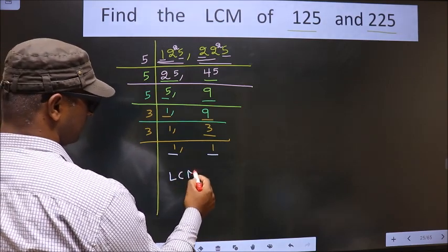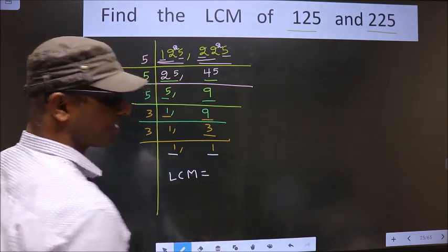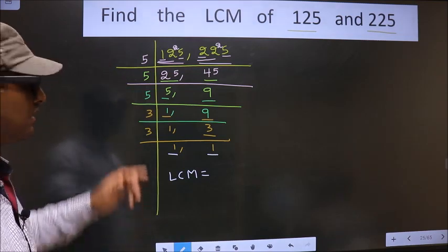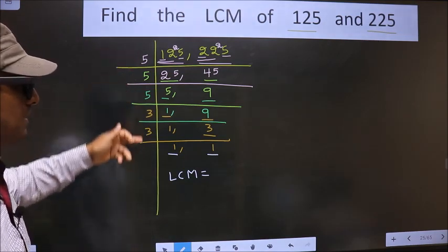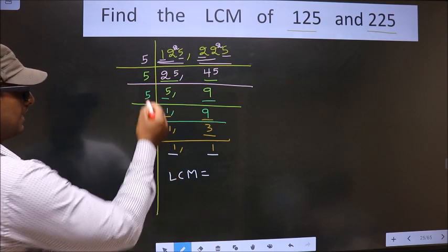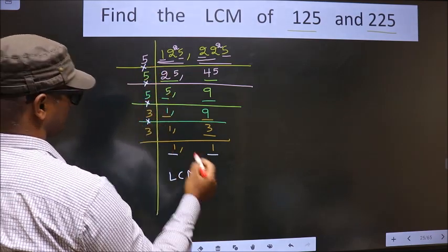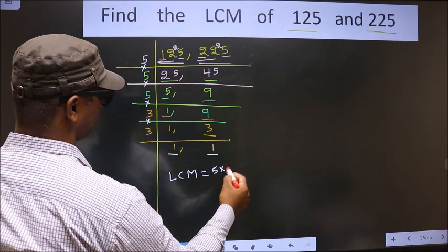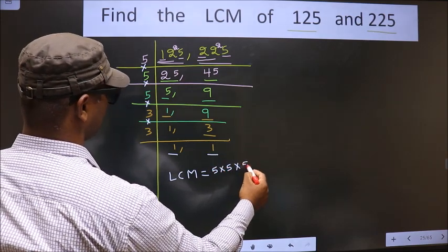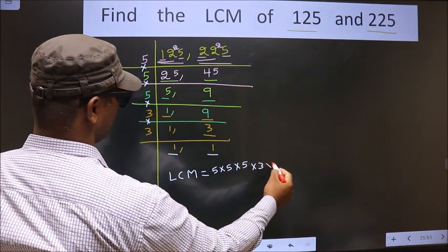So now our LCM is the product of these numbers. That is 5 times 5 times 5 times 3 times 3.